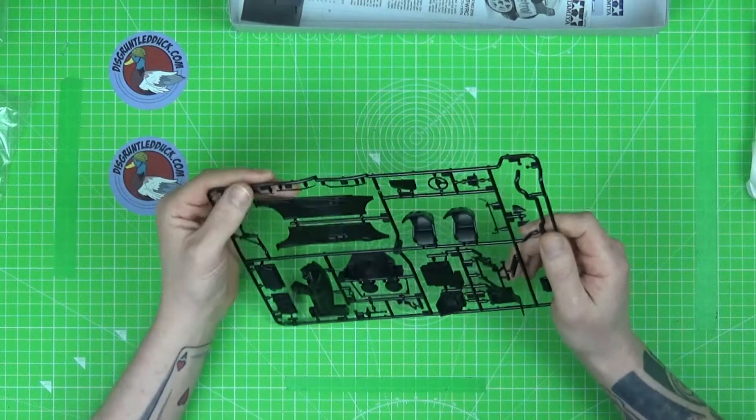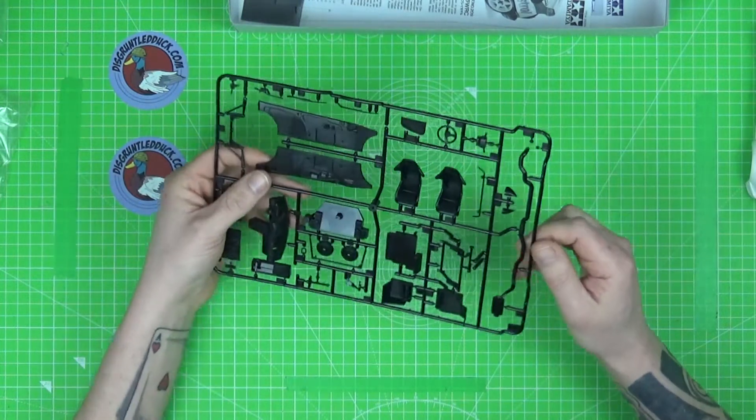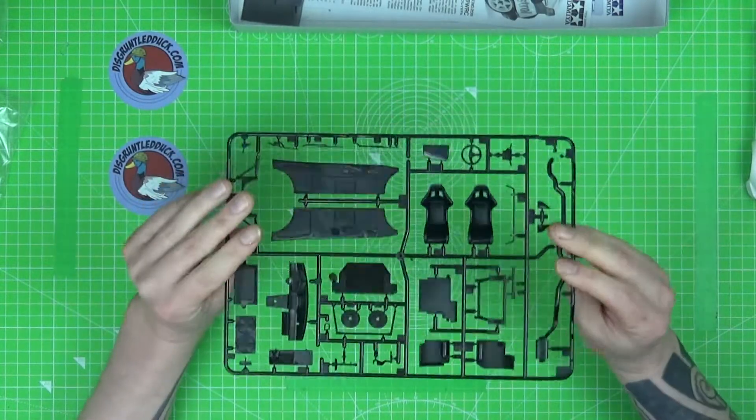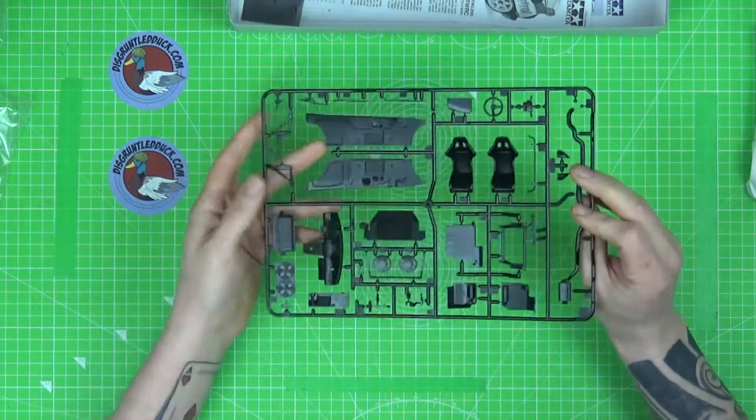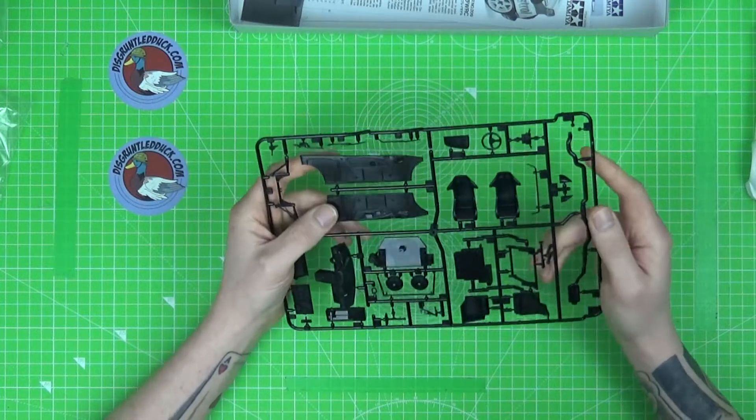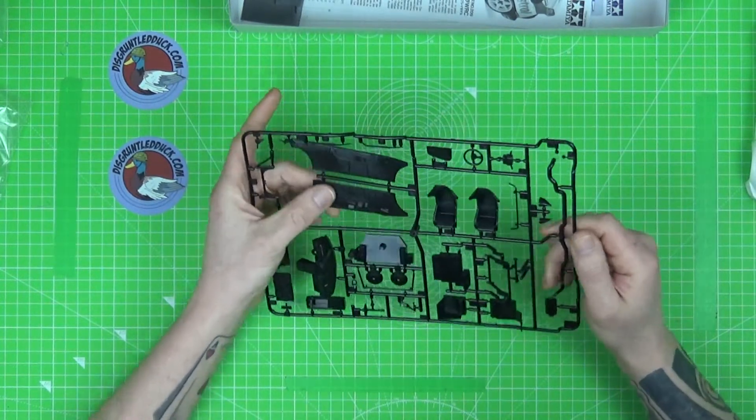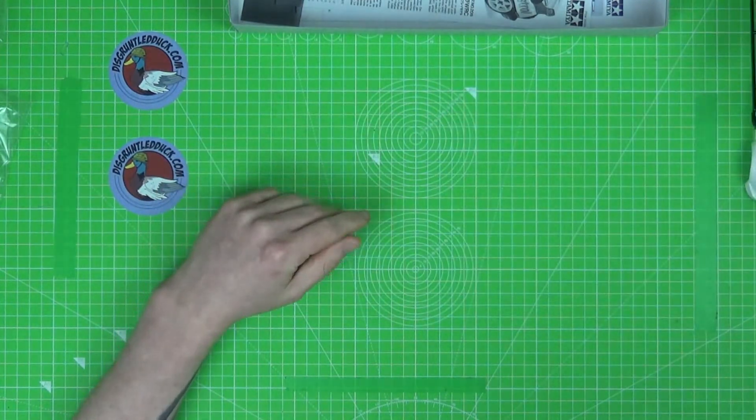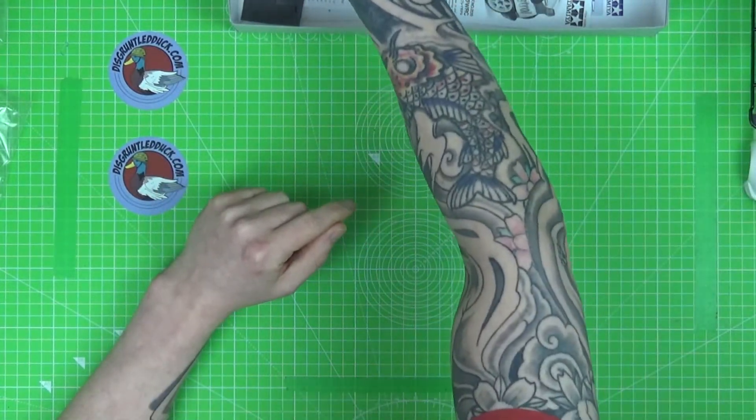Got the gear stick and looks like a handbrake possibly. There's exhaust down the sides, nice steering wheel. There's a decent bit of detail. It's not incredible, but yeah, that's not too bad.